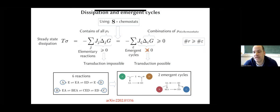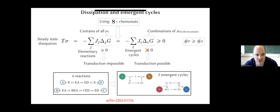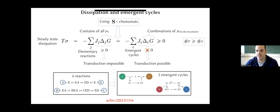The emergent cycles can be thought of as sequences of reactions that, upon completion, do not change the internal species of the network, but do transfer chemostat species from one chemostat to another. Taking this simple network as an illustration — with four chemostat species — there are two emergent cycles. If you perform these three reactions, the net effect is that you haven't changed the internal species, but you've transported one A into a D. The second emergent cycle is very similar.